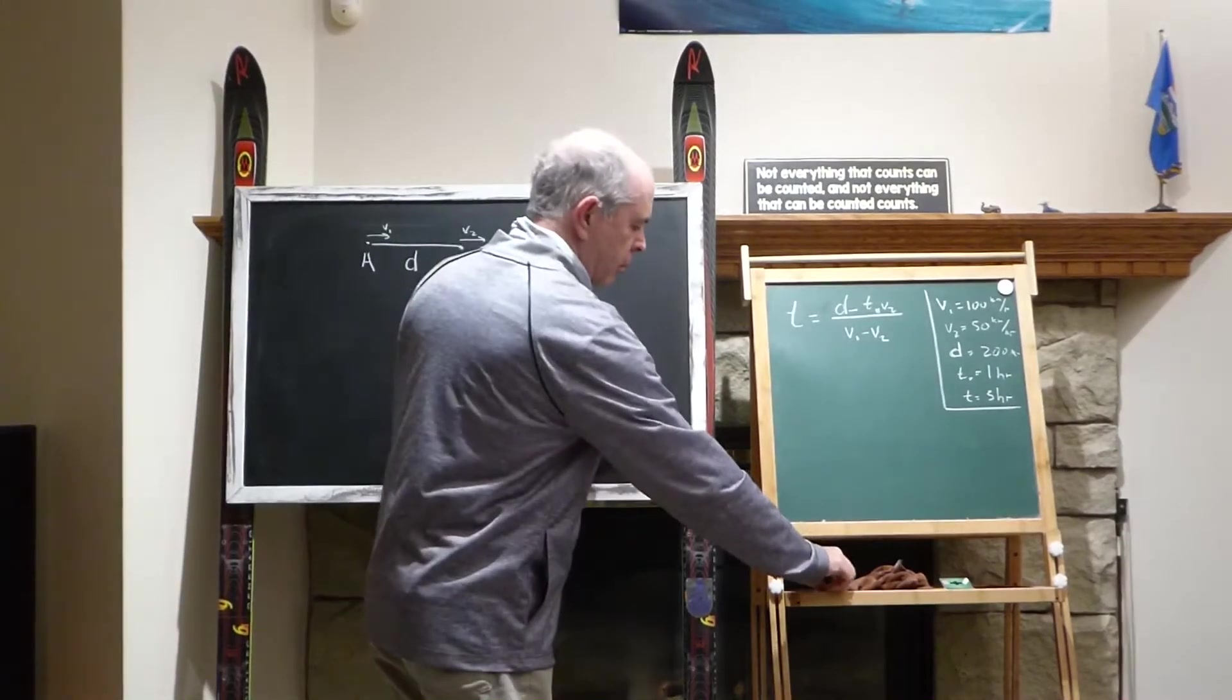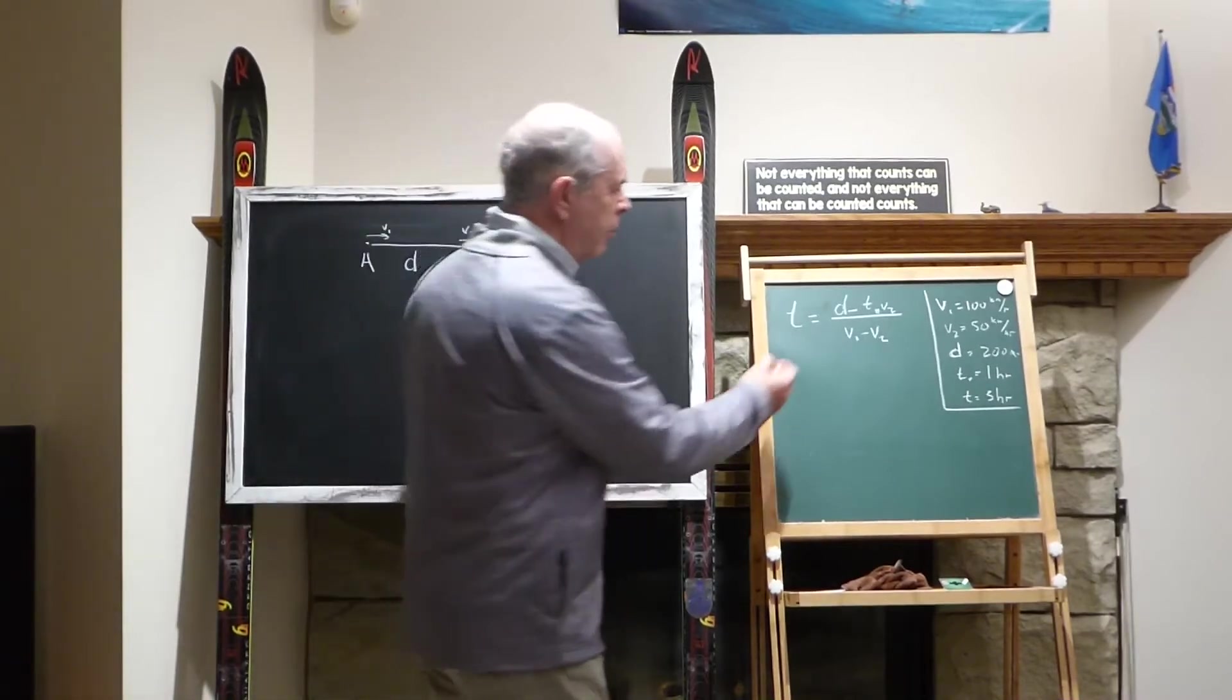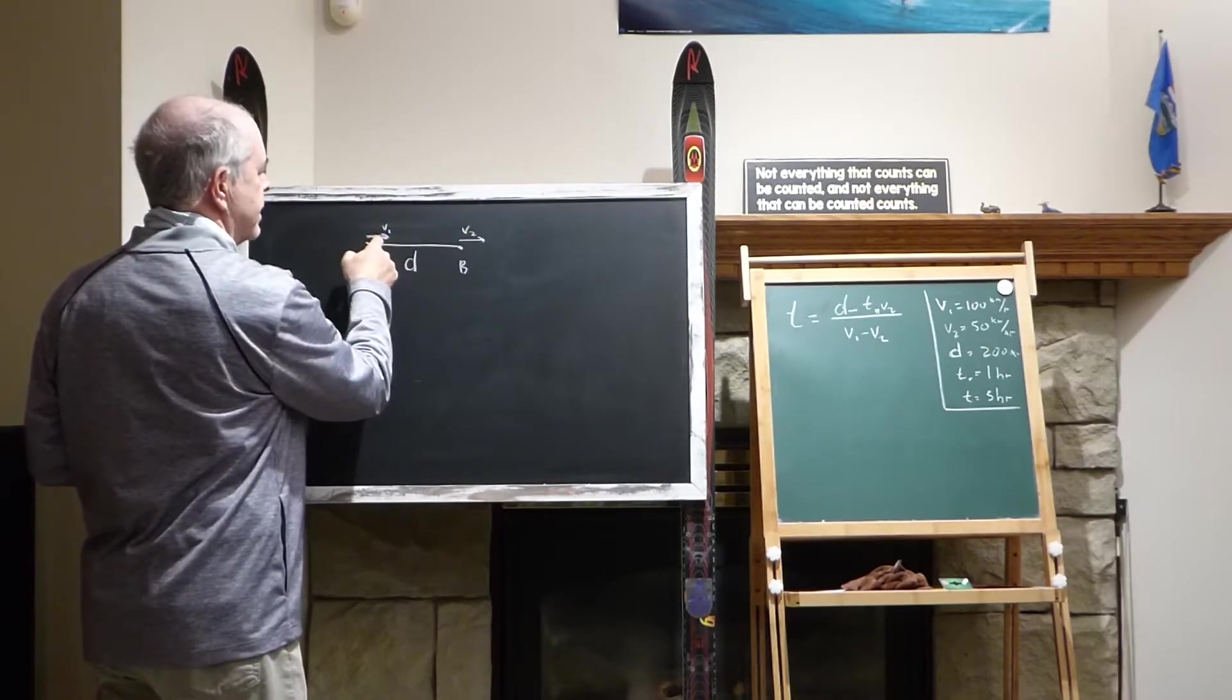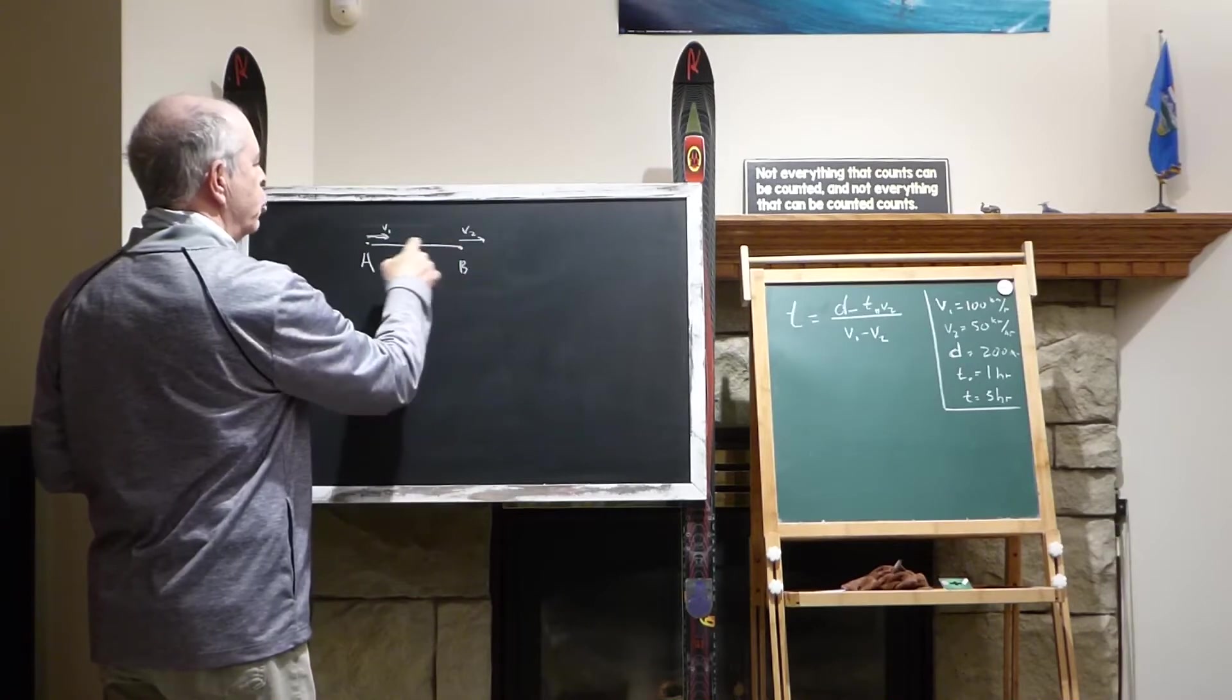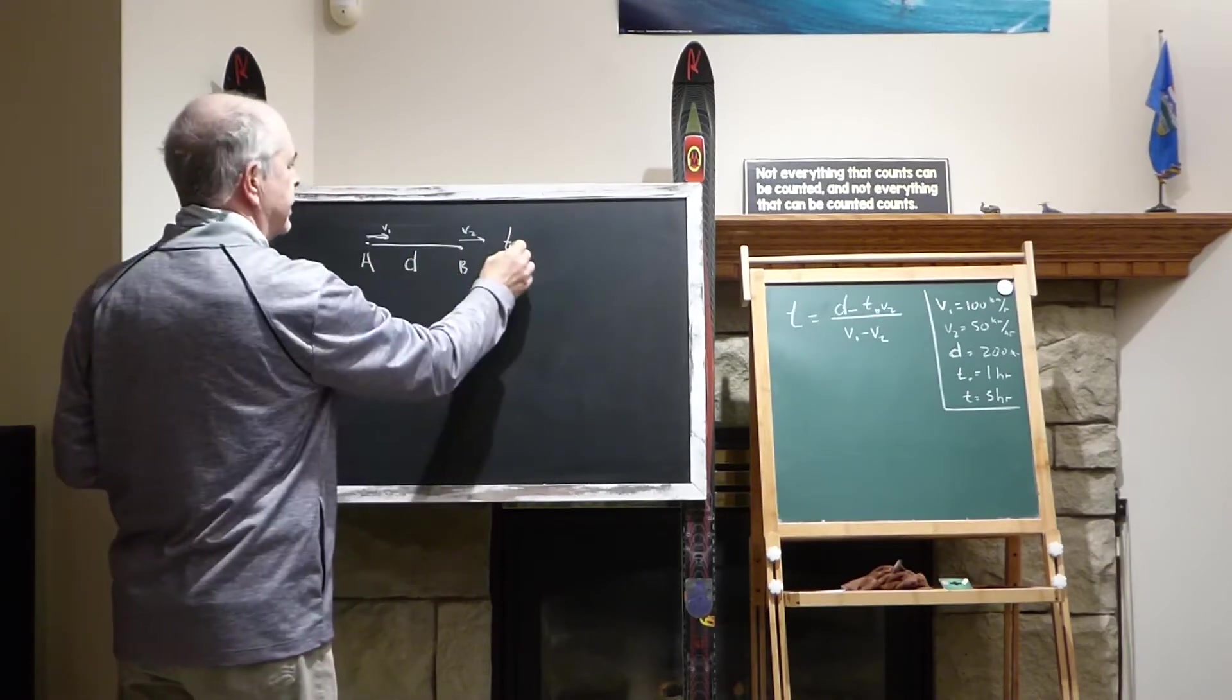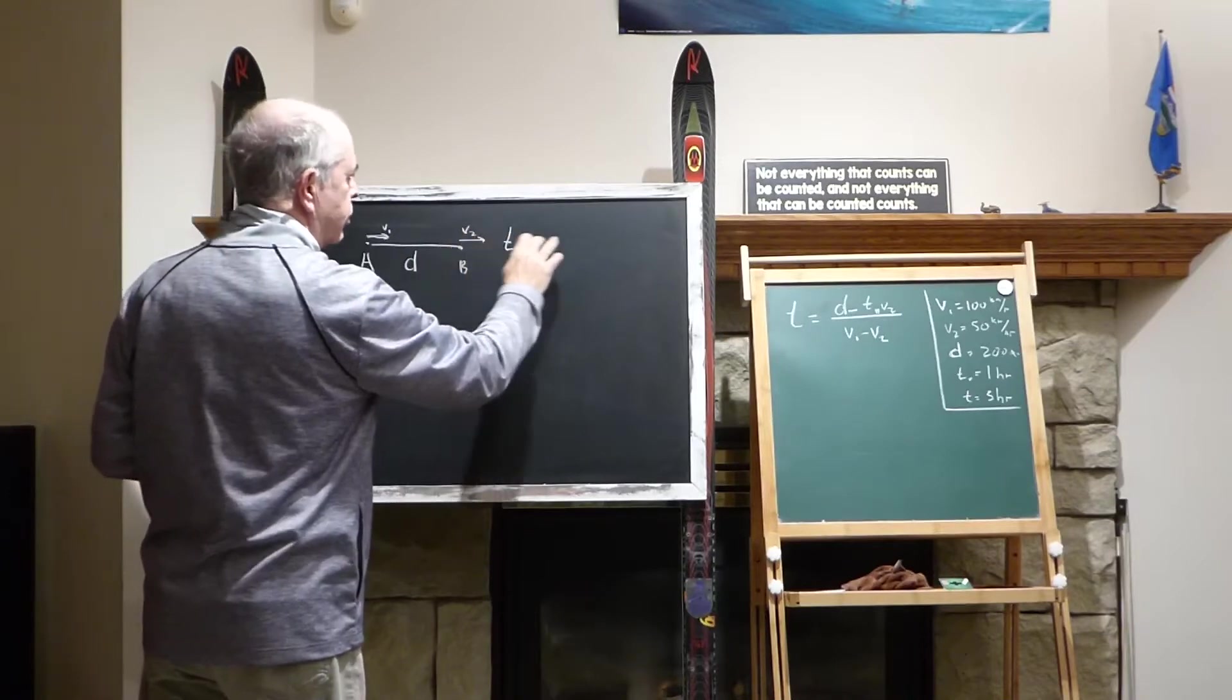This problem is the continuation of the previous one. Remember we received this formula for the case when the car was riding with speed V1, and this is with V2, but this car was staying still for the period of time T0, and only after T0 passed, this car started to drive.